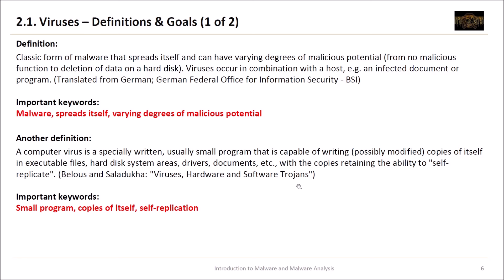A second definition from the book by Belou and Saladouka, 'Viruses, Hardware and Software Trojans': a computer virus is a specially written, usually small program that is capable of writing possibly modified copies of itself into executable files, hard disk system areas, drivers, documents and so on — with the copies retaining the ability to self-replicate. Important keywords are that viruses are small programs, they copy themselves, and they perform self-replication.